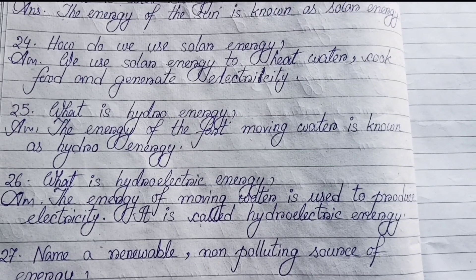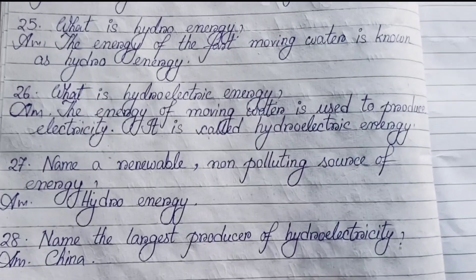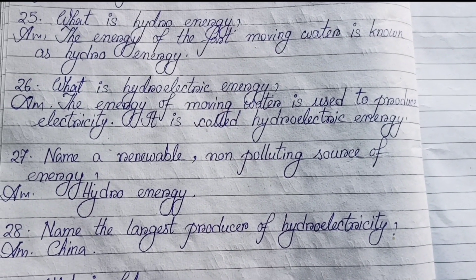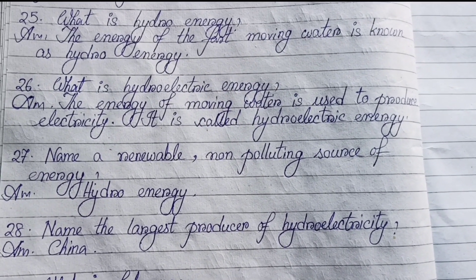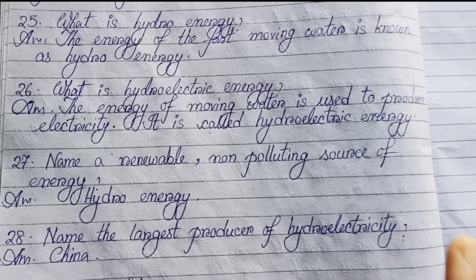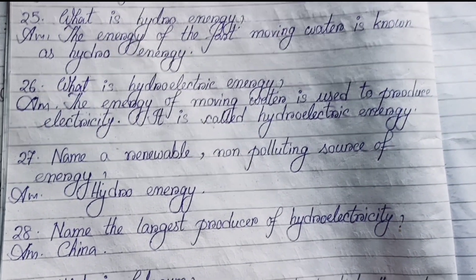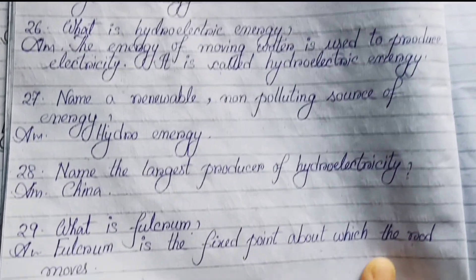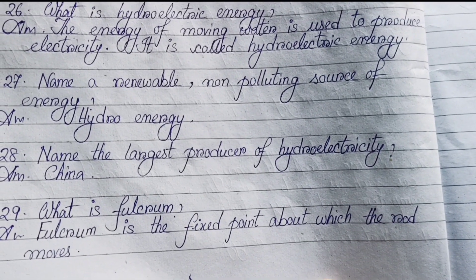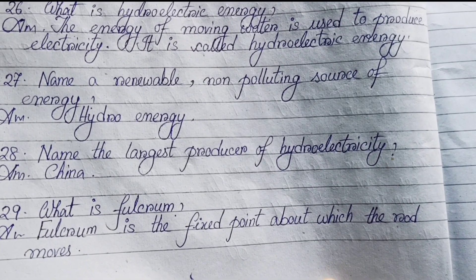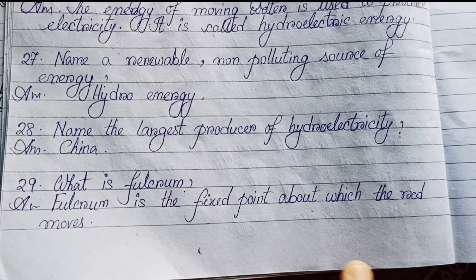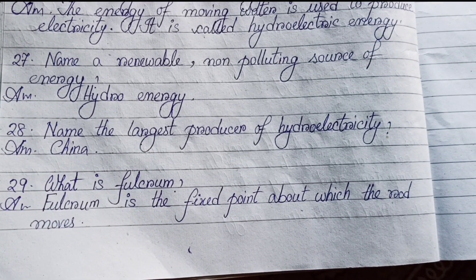Number twenty-five: What is hydro energy? The energy of fast-moving water is known as hydro energy. Number twenty-six: What is hydroelectric energy? The energy of moving water used to produce electricity is called hydroelectric energy.